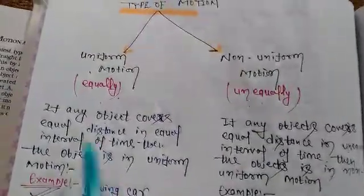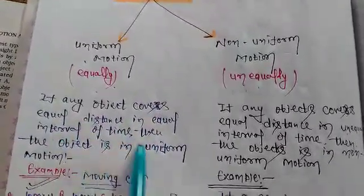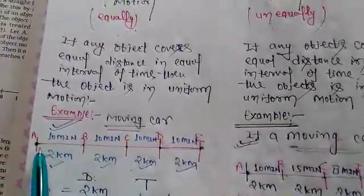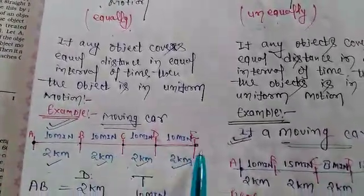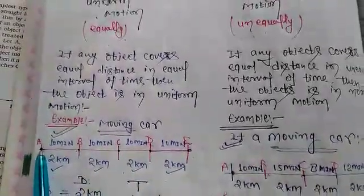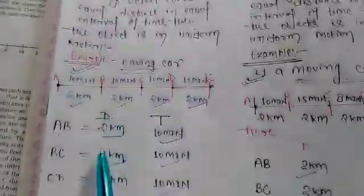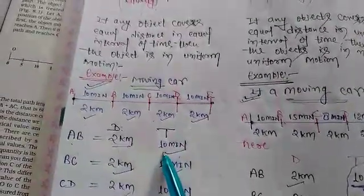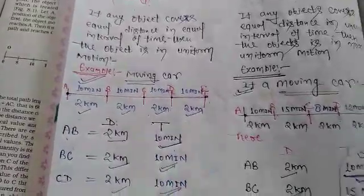To understand uniform motion: if any object covers equal distance in equal interval of time, then the object is in uniform motion. Suppose a car starts from A to B, B to C, C to D, and D to E. Distance between A to B is 2 km, B to C is 2 km, C to D is 2 km. Time taken by the car is 10 minutes each interval.